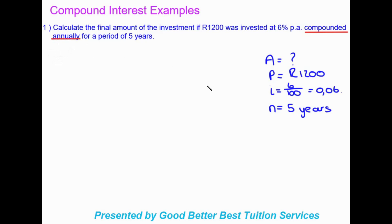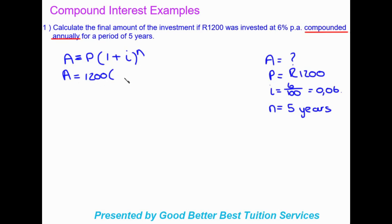Now we set up our equation using compound interest: A = P(1 + i)^n. Substituting in the values, we have A = 1200 × (1 + 0.06)^5. We close the brackets and raise to the power of 5 to find our final answer.